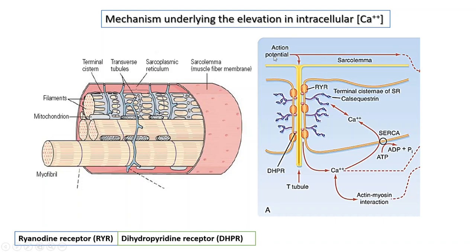When the action potential is propagated along the sarcolemma and goes along the T-tubules, there is a receptor in the T-tubule membrane called the dihydropyridine receptor. This receptor also acts as a voltage-gated calcium channel. When the action potential arrives at this location, depolarization activates the dihydropyridine receptor, the channel opens, and there is an influx of calcium ions into the cytosol.